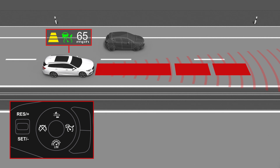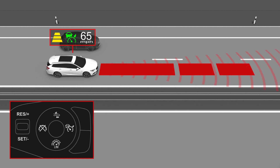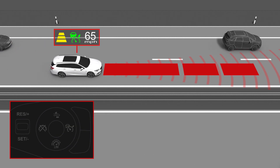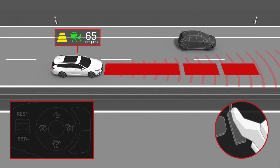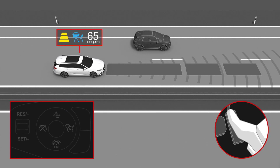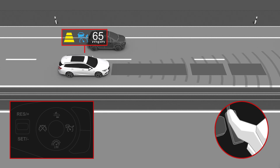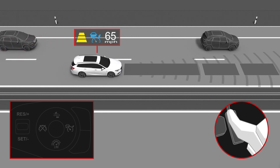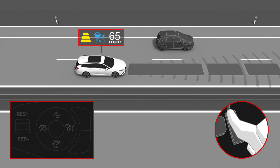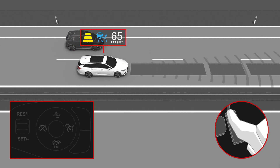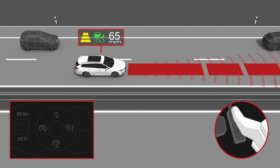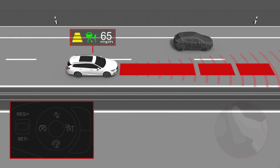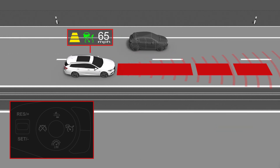You can temporarily override the set speed by pressing the accelerator pedal. While overriding, the automatic braking function of ACC will not be available. When releasing the accelerator pedal, the set speed will be resumed.